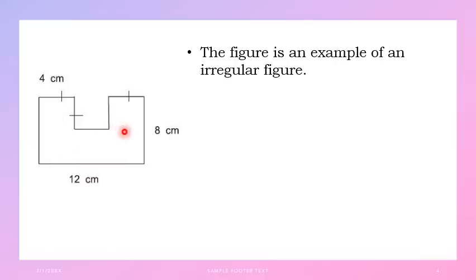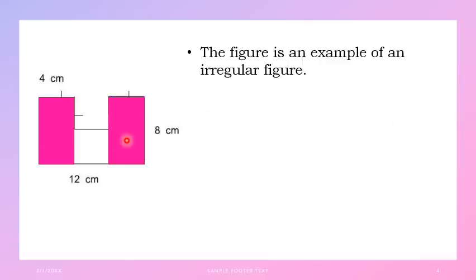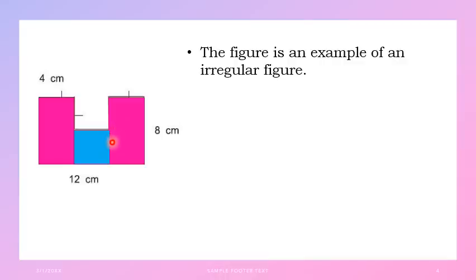So, where are the rectangles and square here? This is the first rectangle, this is the second rectangle, and in the middle, we have a square. When they are combined — these three figures or shapes put together in one figure — we call it an irregular figure. Solving for the area may look difficult at first, but actually it is easy.